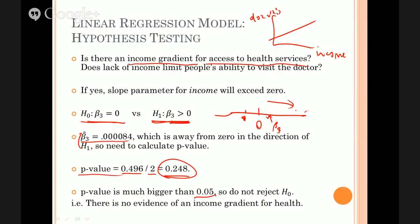Compare that to your significance level of 5%, which is the typical value that we choose, and you'd say it's not small enough, so therefore you do not reject H0. There is no evidence of an income gradient for health in this case.